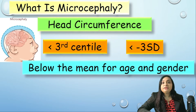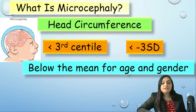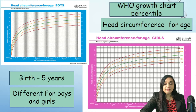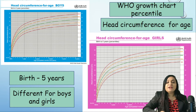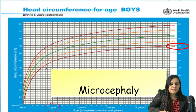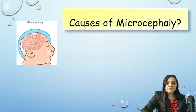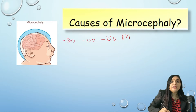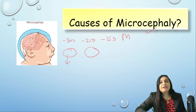What is microcephaly? By definition, it is whenever a child's head circumference is less than the third centile, or less than minus three standard deviations below the mean for age and gender. To know if it is less than the third centile, we have two options: ready-made charts where we plot the circumference, or charts showing the mean value, minus one SD, minus two SD, and minus three SD according to age and gender. If the value is below the third centile, the child has microcephaly.